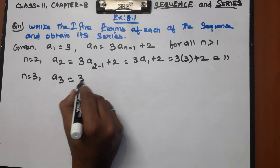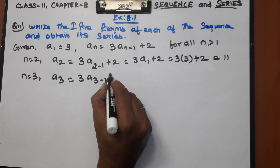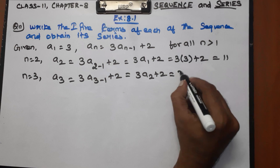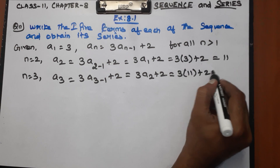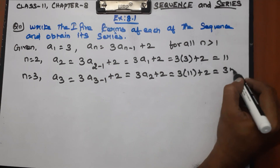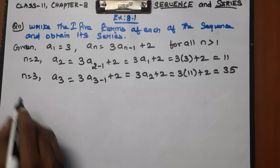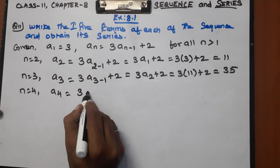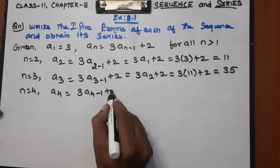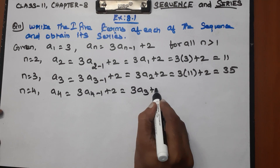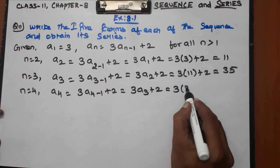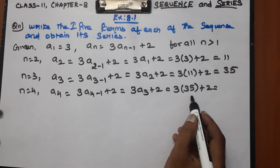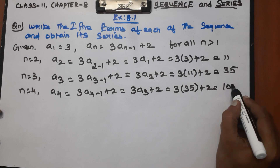For a3: substitute n equal to 3, a3 equals 3 into a2 plus 2, equals 3 into 11 plus 2, equals 33 plus 2, equals 35. For a4: a4 equals 3 into a3 plus 2, equals 3 into 35 plus 2, equals 105 plus 2, equals 107.